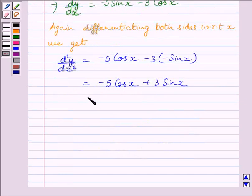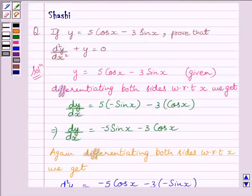Now, it can be further written as minus multiplied by 5 cos x minus 3 sin x. Here, we can see clearly that 5 cos x minus 3 sin x is equal to y.